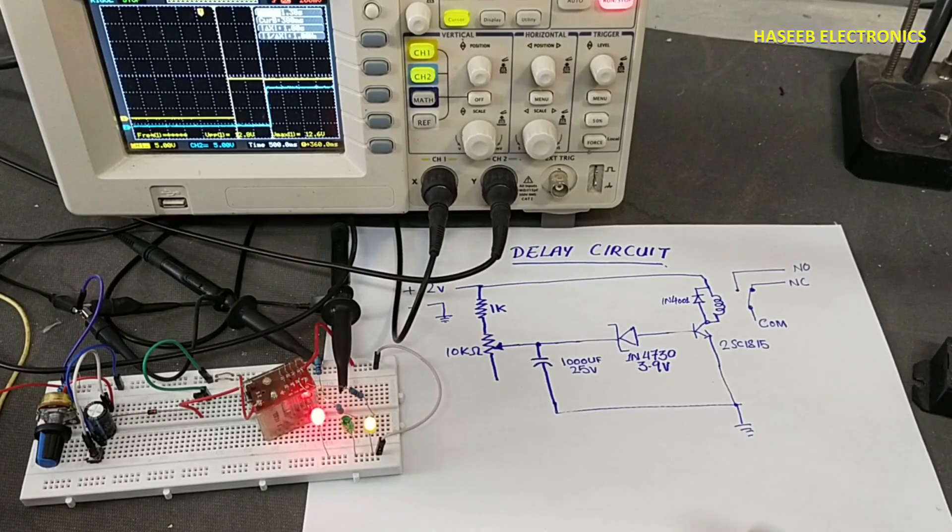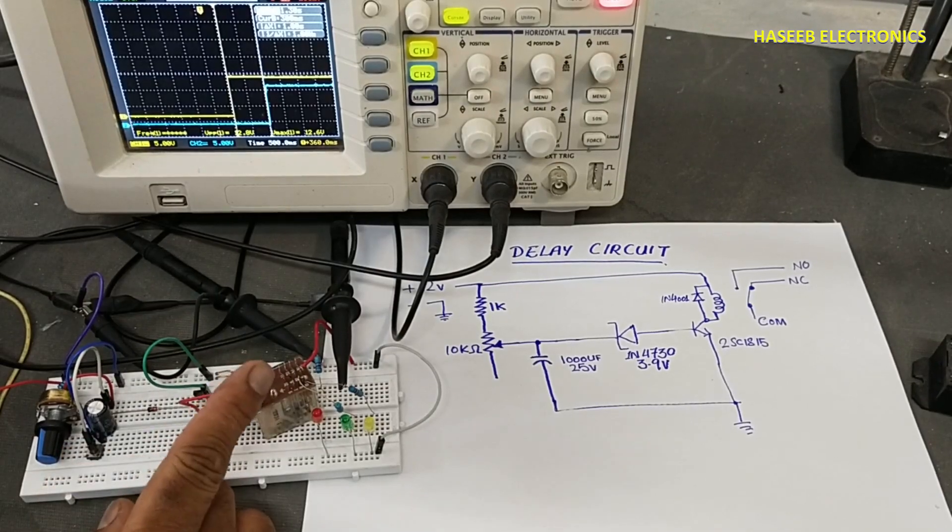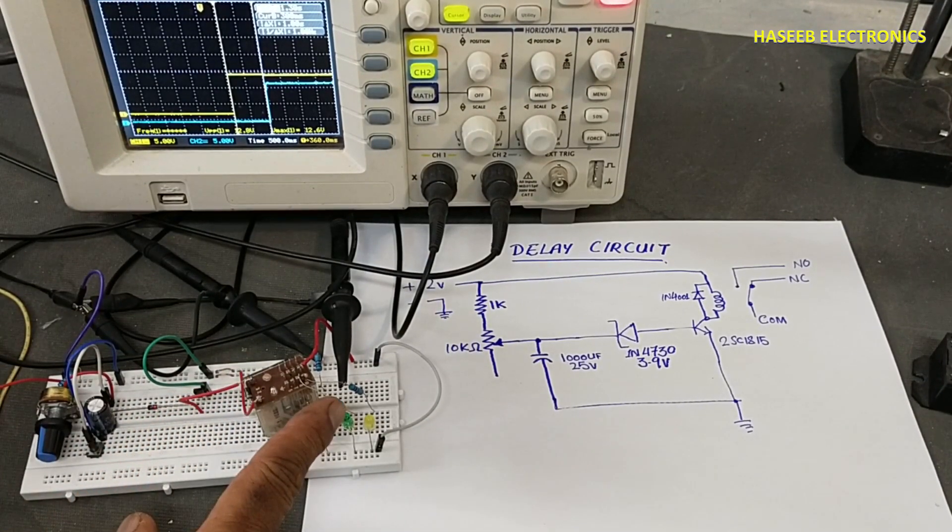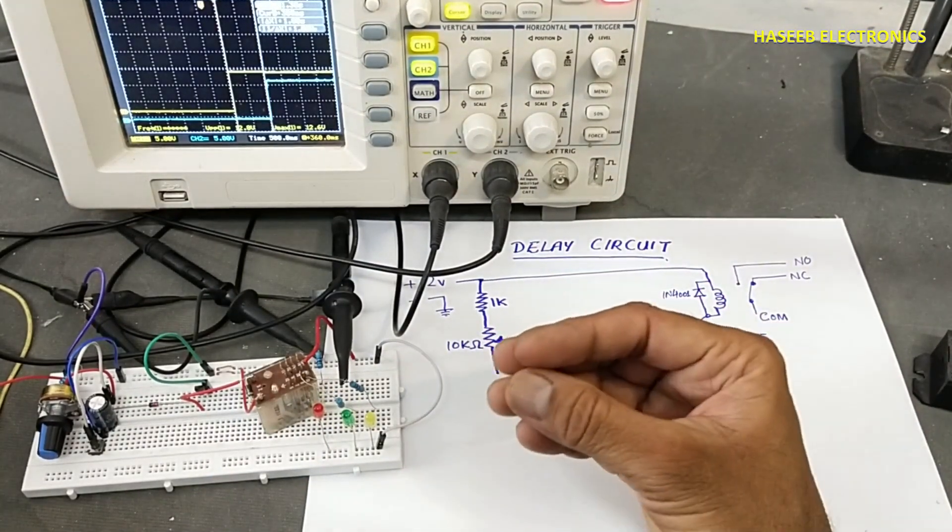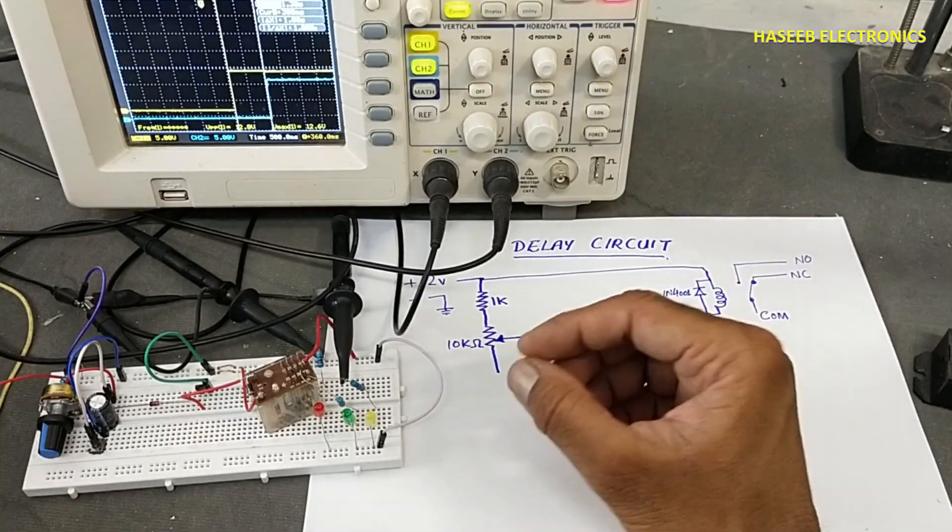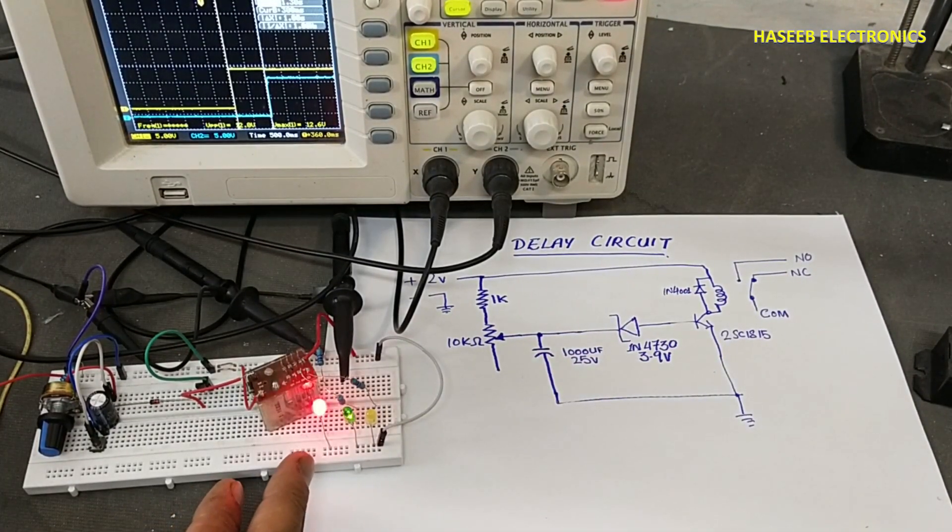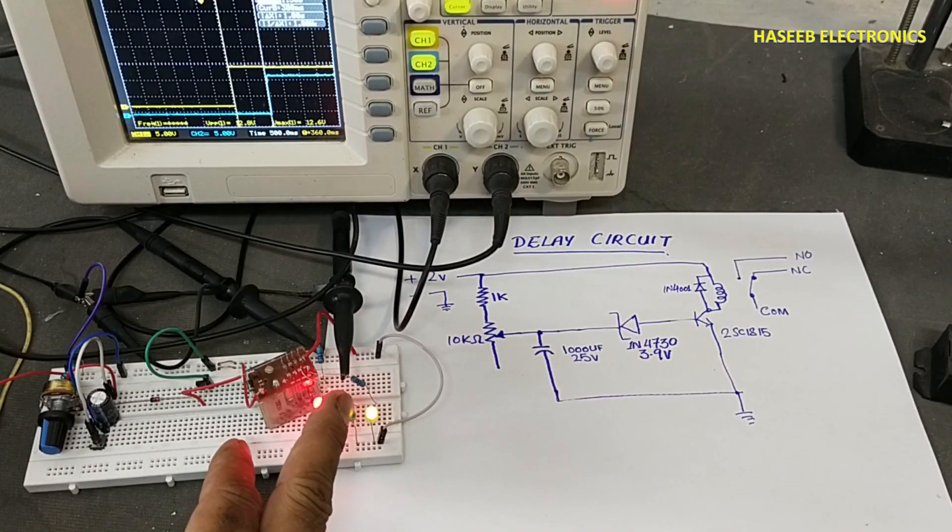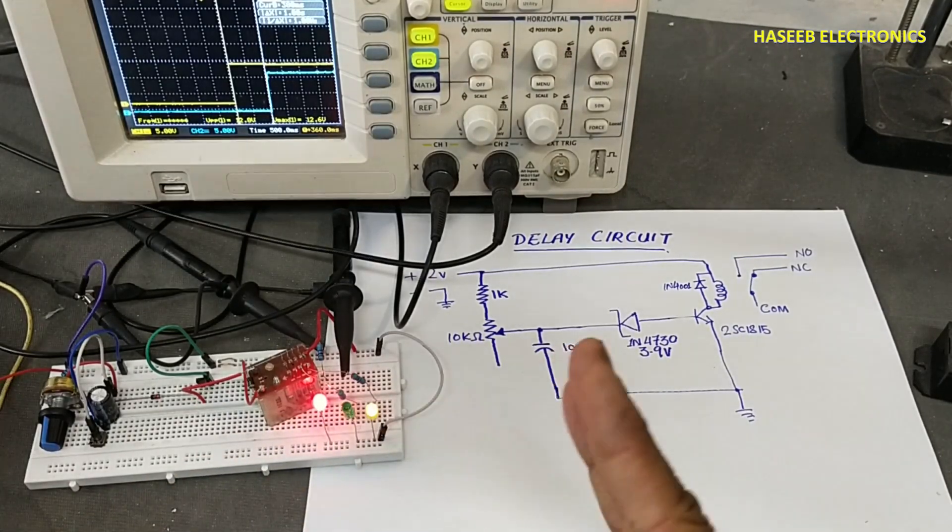Assalamualaikum warahmatullahi wabarakatuh, friends, welcome back to my channel. Today we are discussing this time delay circuit. When we power it on, it turns on one output. At that time it will provide a delayed time for switching on or switching off. After a specific time, this output will stop and it will turn on.